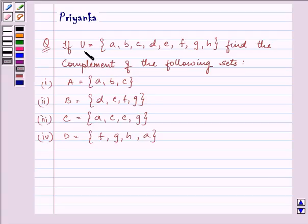It says, if U is equal to the elements A, B, C, D, E, F, G, H, find the complement of the following sets.